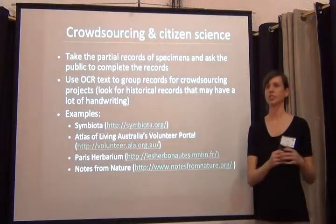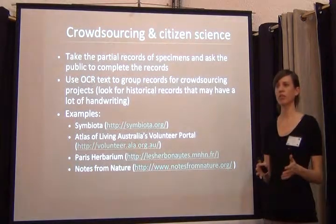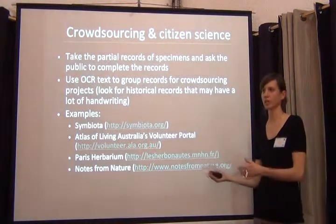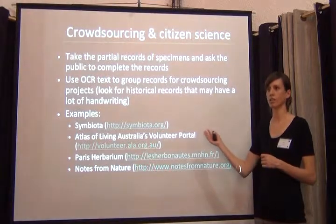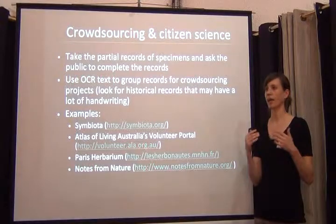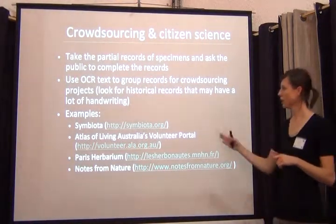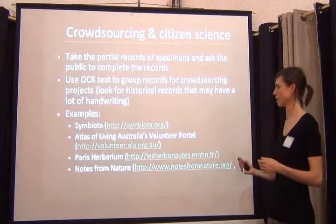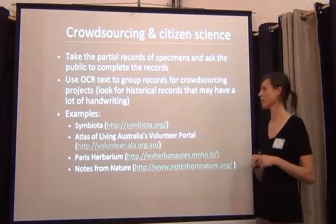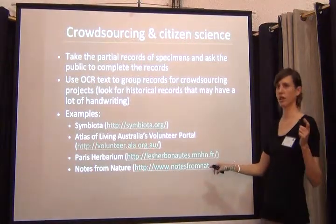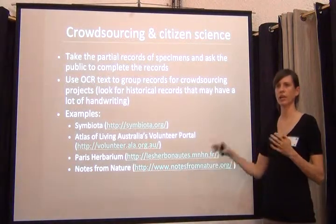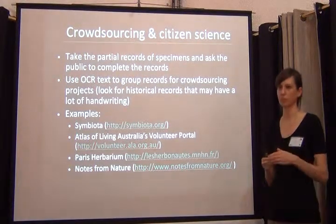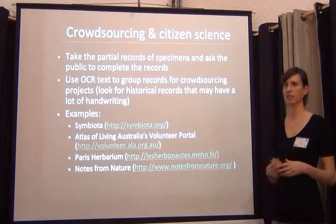I'm not going to go too much into crowdsourcing because Christiana gave a great introduction to it already. But another way, other than using our staff to enter complete data records using OCR, is to throw this OCR text out, group the records, and put it into crowdsourcing portals and ask citizen scientists to really help out. Symbiota can be used to get crowdsourcing projects going. The Atlas of Living Australia has a great volunteer portal. Notes from Nature is doing Calbug but is also doing our Myco portal — we are doing a huge digitization project of labels from fungal specimens and asking volunteers to help us with those.